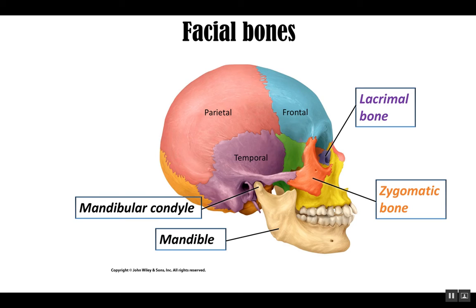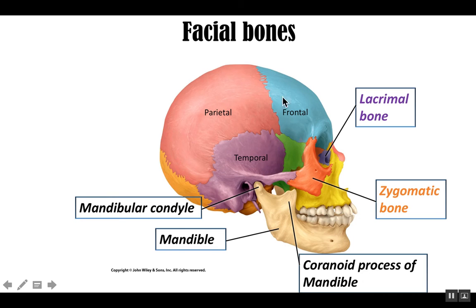The portion of the mandible that forms the TMJ is known as the mandibular condyle, and it articulates with what's called the mandibular fossa, which is the depression in the temporal bone. The mandible also has a crown-shaped structure called the coronoid process of the mandible, which provides a large surface area to attach muscles of mastication to allow us to chew our food.